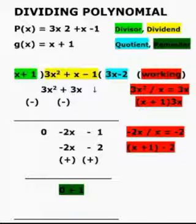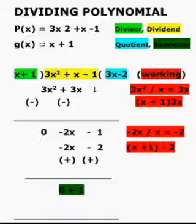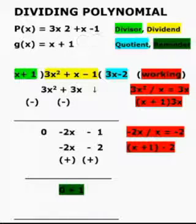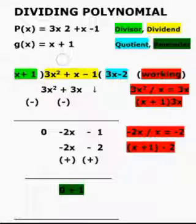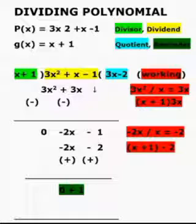Let us consider a polynomial P(x) = 3x² + x - 1 and a non-zero polynomial g(x) = x + 1. Now divide the polynomial P(x) by g(x).